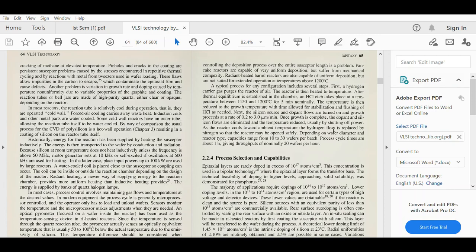Depending on wafer diameter and reactor type, capacities range from 10 to 30 wafers per batch. In one batch, we can produce 10 to 30 wafers depending on the size and diameter. Process cycle times are about one hour, giving throughputs of normally 20 wafers per hour.